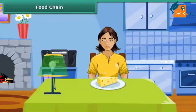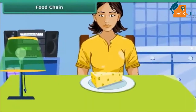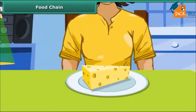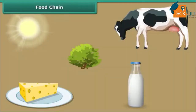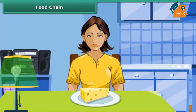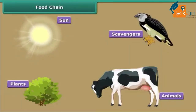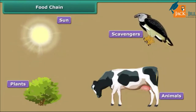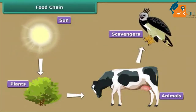It is breakfast time. Rhea is relishing a cheese cube and decides to trace it back to its origin. The cheese cube comes from milk, and the milk from the cow. The cow eats plants, and plants produce their food with the help of sunlight. Rhea just traced the food chain. The food chain is an arrangement in which energy passes from one organism to another. The main constituents of the food chain are the sun, the plants, the animals and the scavengers.